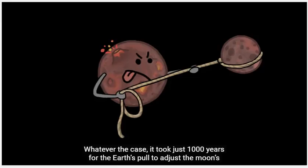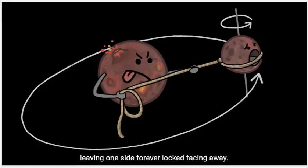Whatever the case, it took just a thousand years for the Earth's pull to adjust the Moon's spin enough that one rotation of the Moon corresponded to one trip around the Earth, leaving one side forever locked facing away.